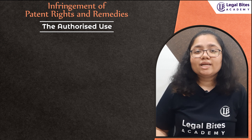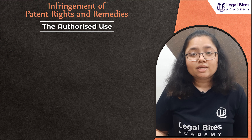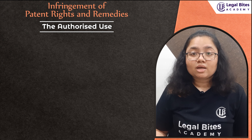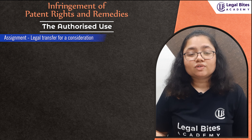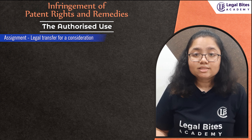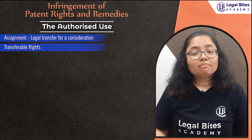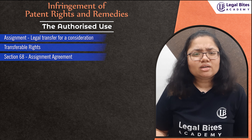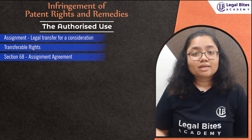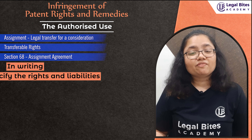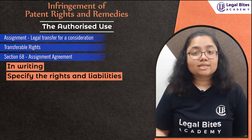The authorized use by any person is when a person has been assigned the patent rights by the patent holder. Assignment is the legal transfer to another person of the rights or the property for a consideration. Patents being transferable rights can be assigned to another person. Section 68 of the Act clearly specifies that the assignment agreement must be in writing and such document should also specify the rights and liabilities of the parties clearly.